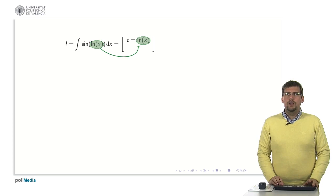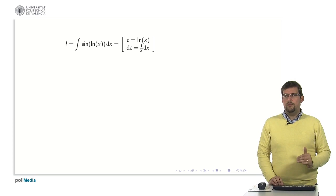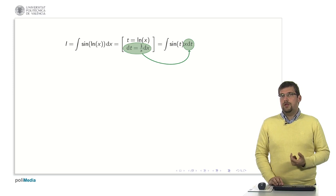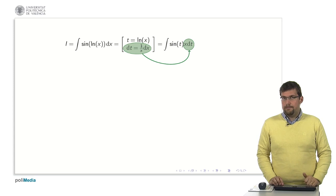Well we make the change, t would be the logarithm and now we calculate the dt which is simply the derivative. The derivative of the logarithm is 1 divided by x multiplied by dx and it is now when we can apply the change of variable.